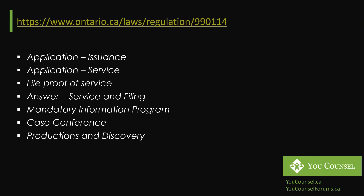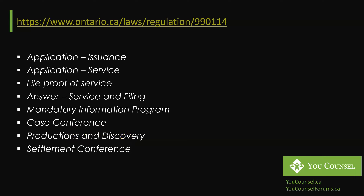Once the case conference is completed, both parties are required to produce certain documents to the other side. This could be financial disclosure or other documents relevant to the application. The applicant has to provide copies of their documents to the respondent, and vice versa. Those will be the documents that both parties rely on to pursue whatever remedy they are seeking. The production and discovery process does not have to occur after the case conference — it can take place shortly after the answer has been filed. If you require further discovery of documents, you may have questions about documents from the other side, which you can address through the discovery process, very similar to the process under the rules of civil procedure.